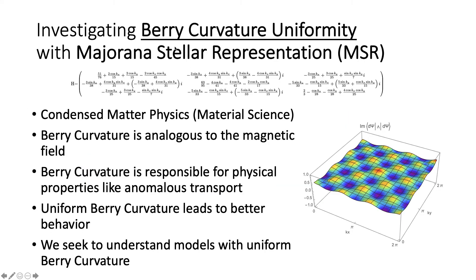My research more specifically involves investigating Berry curvature uniformity with the Majorana stellar representation. In condensed matter physics, or material science semiconductors, Berry curvature is analogous to the magnetic field and is responsible for physical properties like anomalous transport. We want to find models with uniform Berry curvature because they lead to better behavior, using the technique known as MSR — Majorana stellar representation.